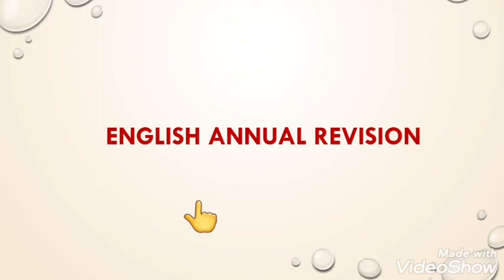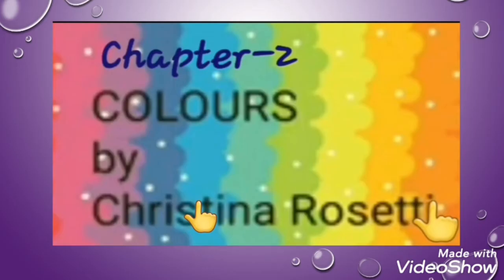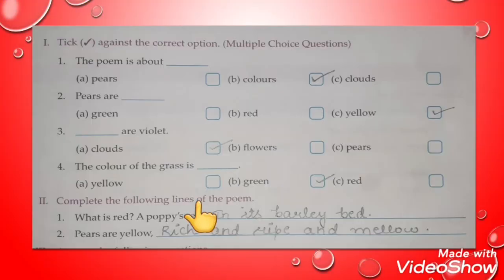Good morning, dear students. Today we are going to start the annual revision for our English. First, we are going to take chapter number 2, that is 'Colors' by Christina Rossetti. In this chapter we are going to discuss the book exercise and the question answers of this chapter.